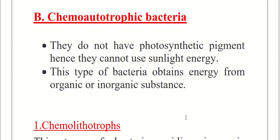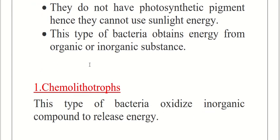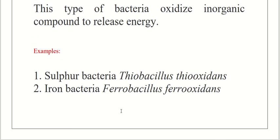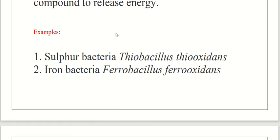The next category is chemo-autotrophic bacteria. They do not have photosynthetic pigment and hence cannot utilize sunlight energy. These bacteria obtain energy from oxidizing inorganic or organic substances. Chemo-lithotrophs oxidize inorganic compounds to release energy. Examples include sulfur bacteria such as Thiobacillus thiooxidans, and iron bacteria such as Ferrobacillus ferrooxidans.